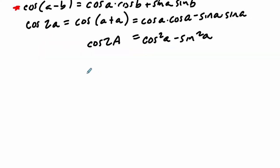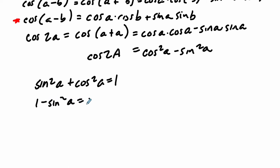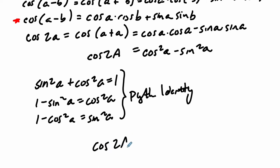We can go further using our Pythagorean identity. Since sine squared A plus cosine squared A equals 1, we can write that 1 minus sine squared A equals cosine squared A, and 1 minus cosine squared A equals sine squared A. These can be substituted into the cosine double angle formula. Keeping the Pythagorean identity in mind, we can transform cosine of 2A equals cosine squared A minus sine squared A by substituting 1 minus cosine squared A for sine squared A.